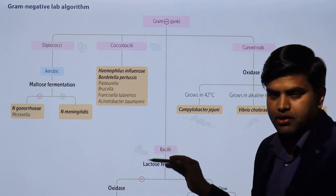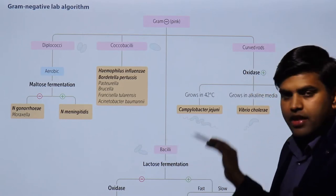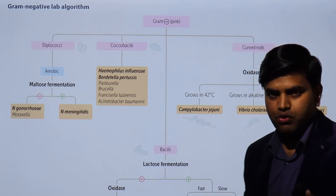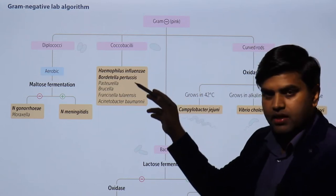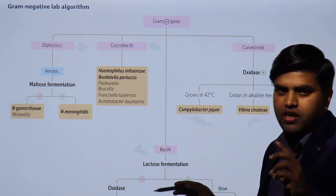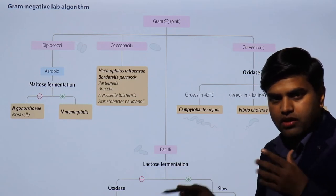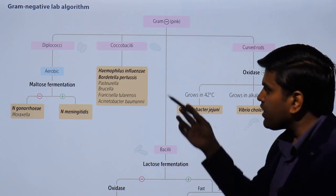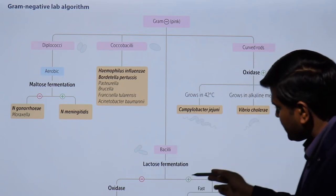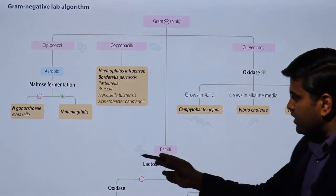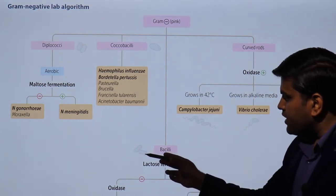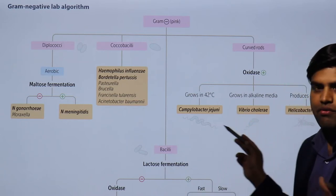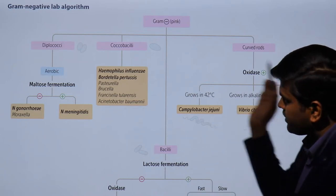Among bacilli, they are divided into different groups: some are coccobacilli — they are bacilli but their length and breadth are almost equal, so they look like cocci. There are true bacilli which are cylindrical in shape. And there are a few bacilli which are curved in nature.